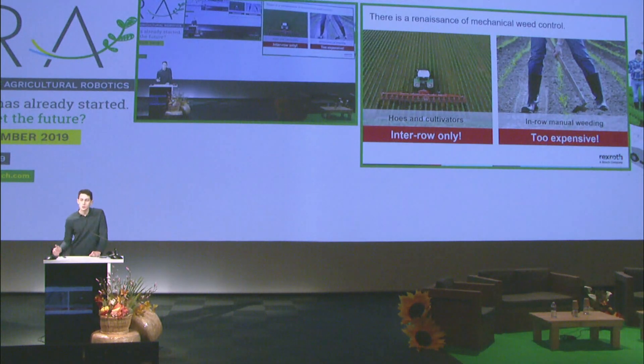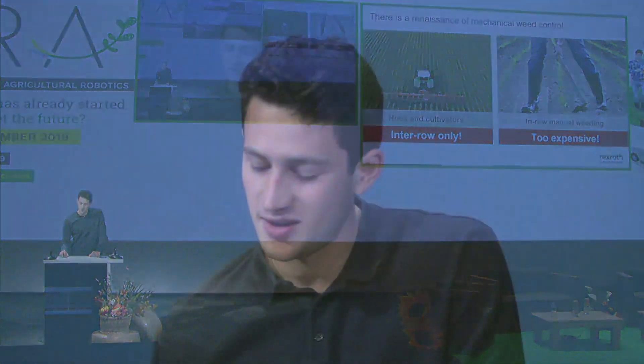I don't think that manual labor is a solution. The issue is not that we're missing tools to remove the plants. The issue is really how do we replace the selectivity of the chemical. Today we spray chemicals on fields that are selective — they kill all plants except for the crop type.